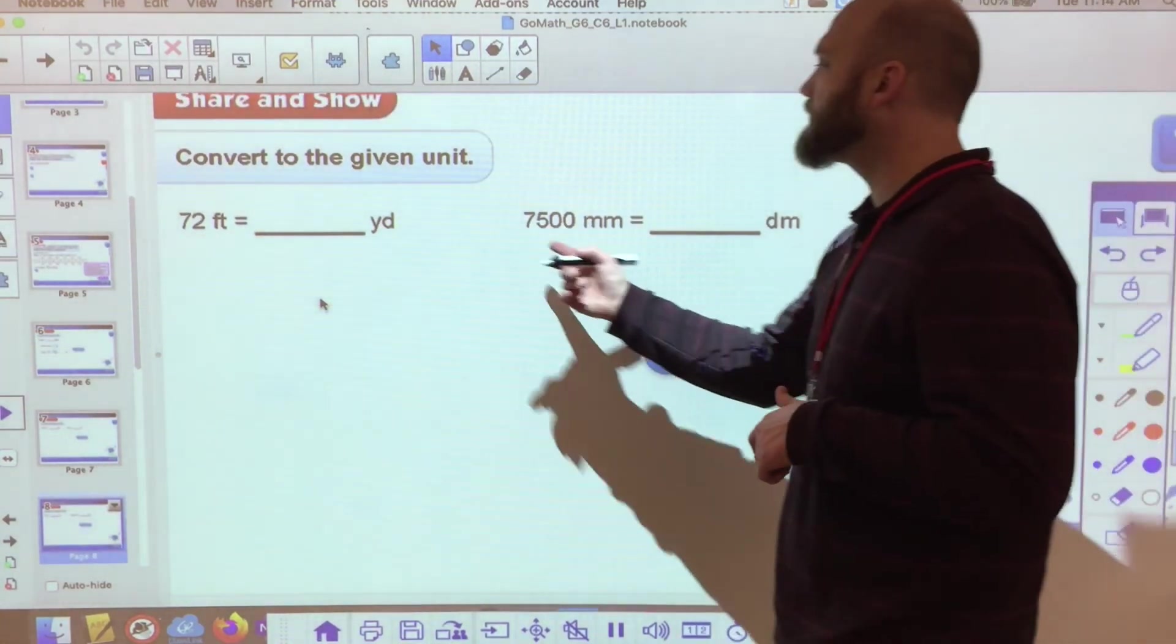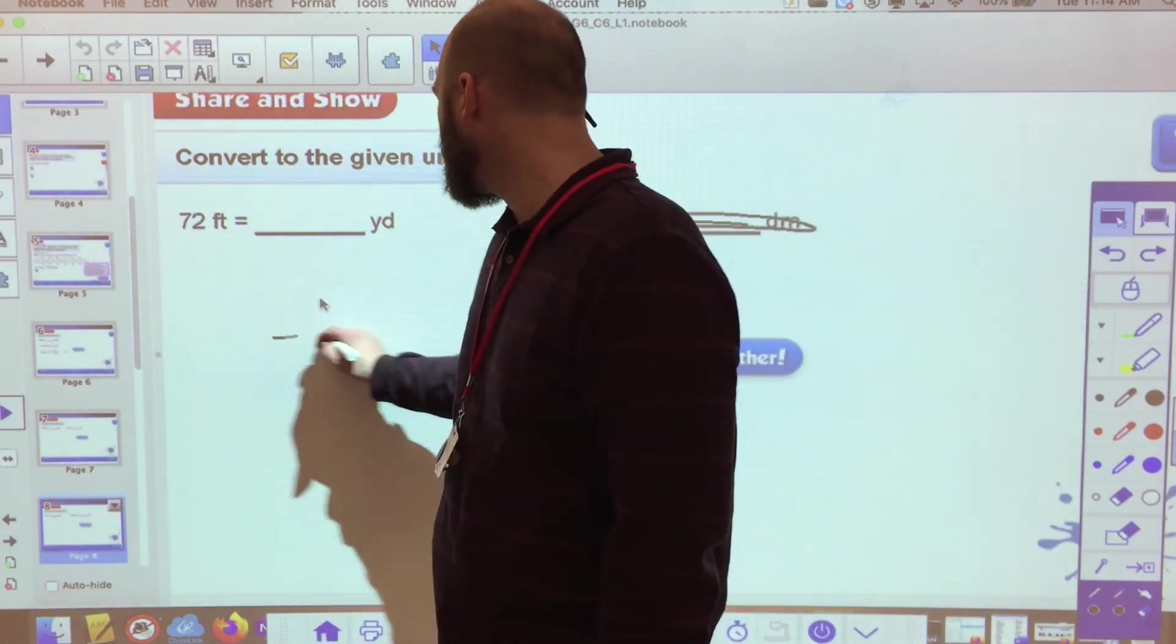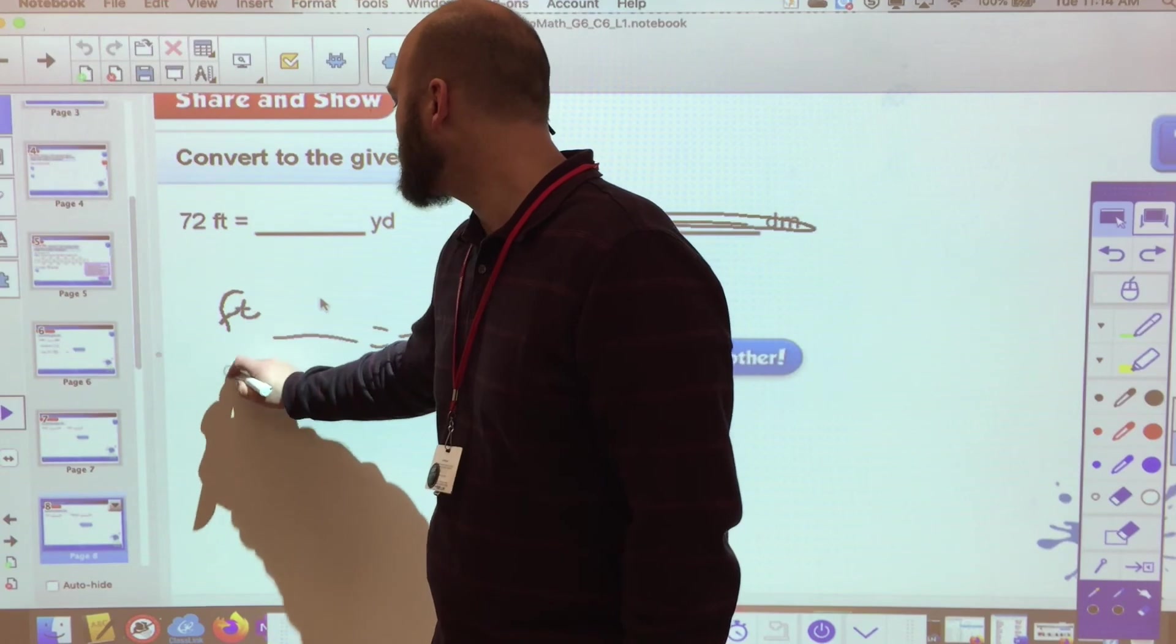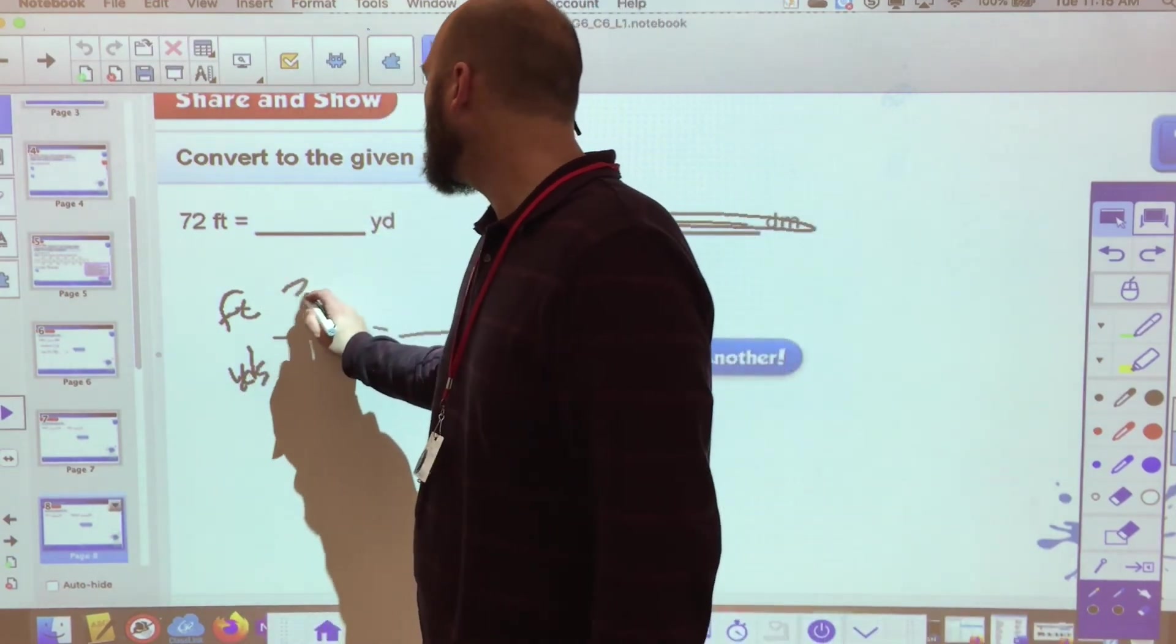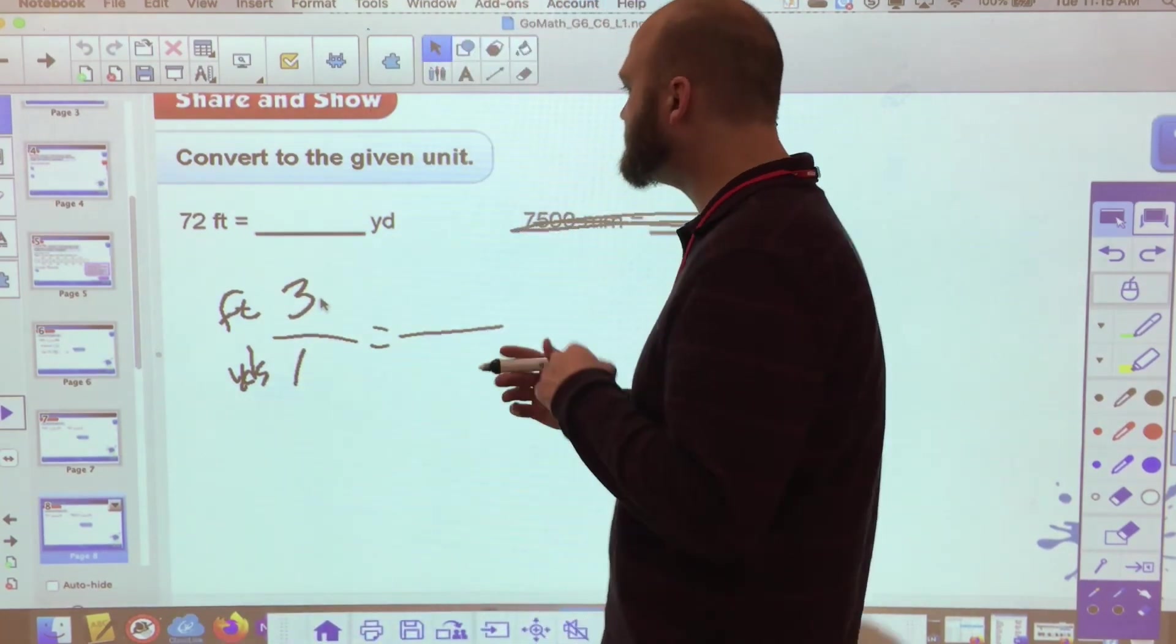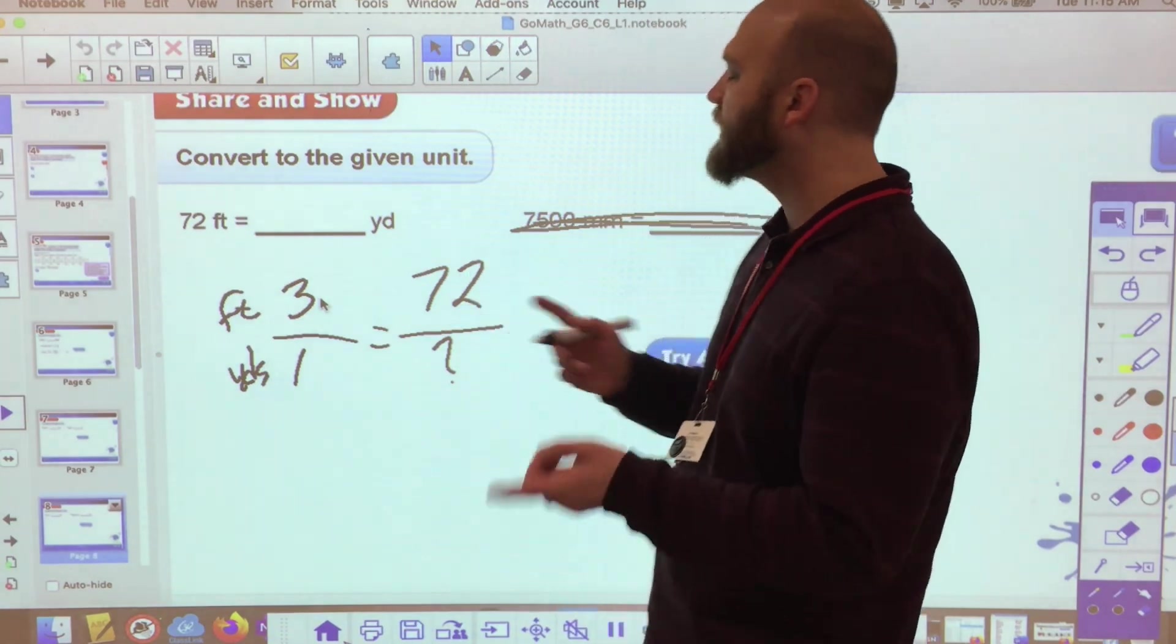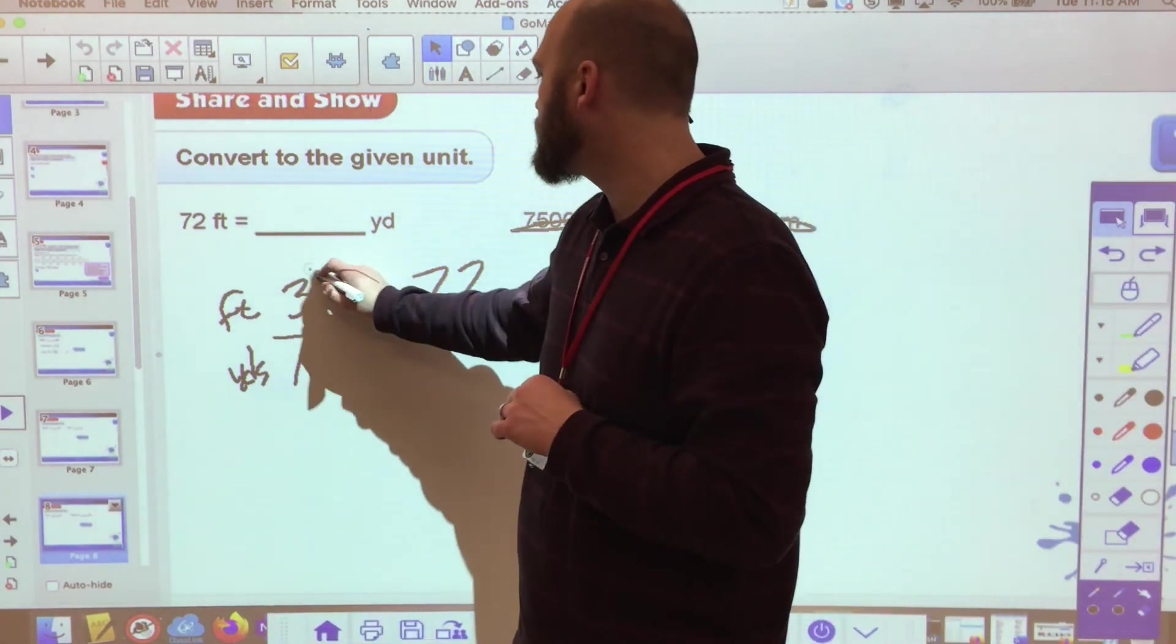Let's try one more. Seventy-two feet equals how many yards? I'm going to go ahead and cross this part up. Seventy-two feet equals how many yards? So I set up my conversion and I know that I am talking about feet and I'm talking about yards. And it doesn't matter which is on top and which is on bottom, as long as they're doing the same thing. Well, I know there are three feet to one yard. So I need 72 feet to how many yards? Well, how do I go from three to seventy-two?